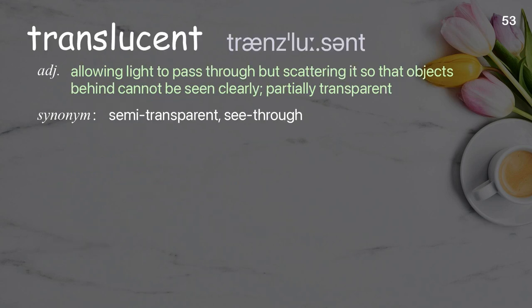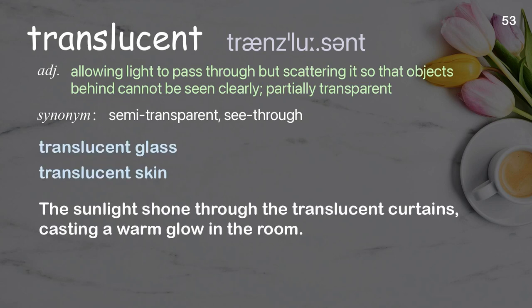Translucent: Allowing light to pass through, but scattering it so that objects behind cannot be seen clearly; partially transparent. Examples: Translucent glass. The sunlight shone through the translucent curtains, casting a warm glow in the room.